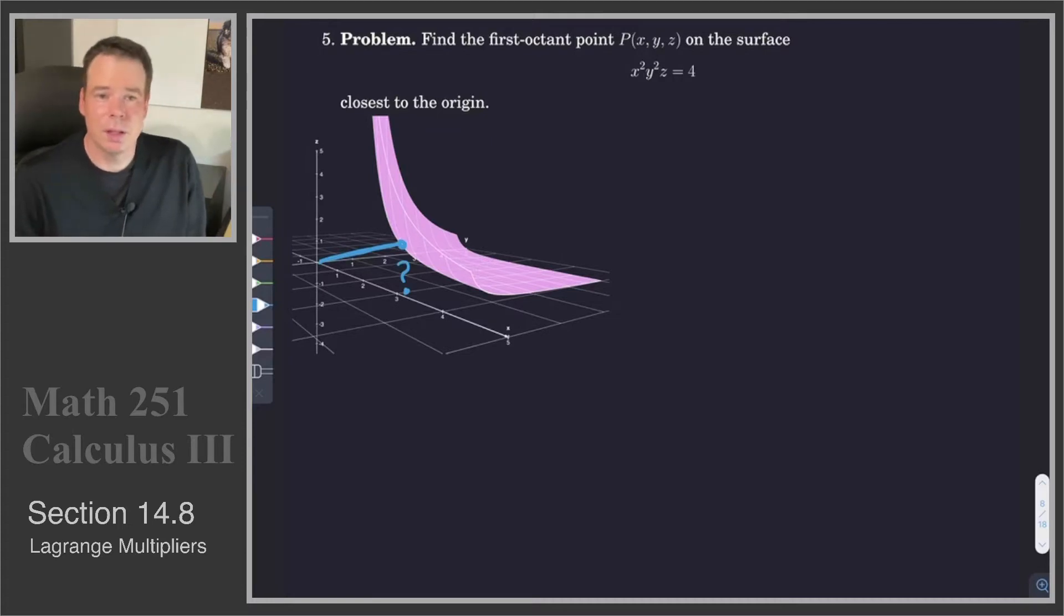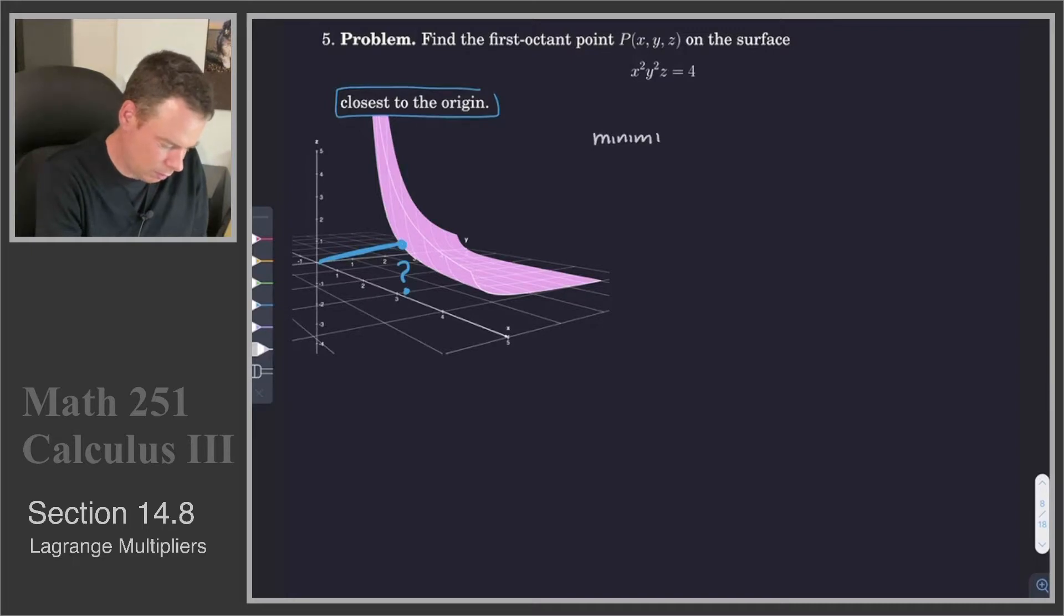So how do we set this up as an optimization problem? Well, we need to find something we're trying to either maximize or minimize. And here we want to find a point that's closest to the origin. So that tells us we want to minimize the distance function. So for a point x, y, z, we want to minimize the distance that point is to the origin.